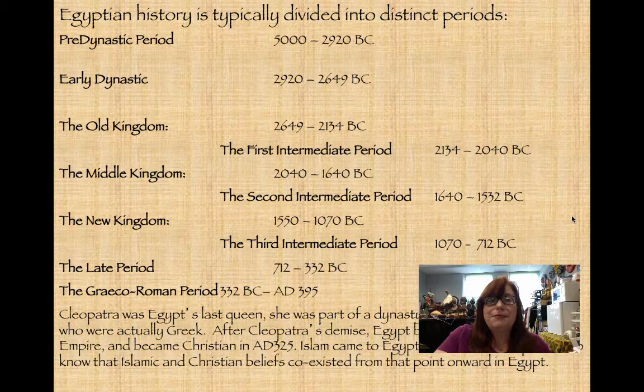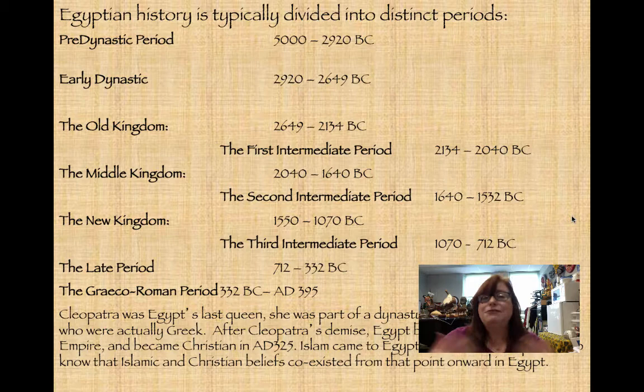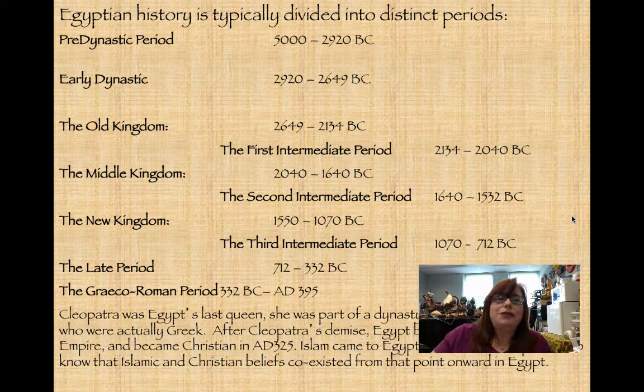Throughout Egyptian history you'll hear of dynasties — Dynasty 0, Dynasty 1, all the way up to Dynasty 31. The reason for this is that every time there's a new ruling family, that's a new dynasty.